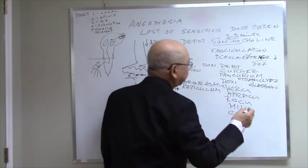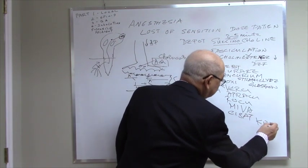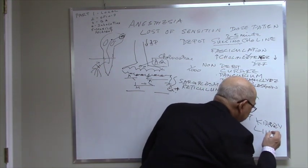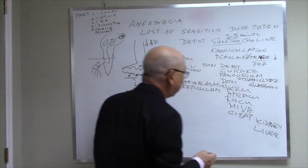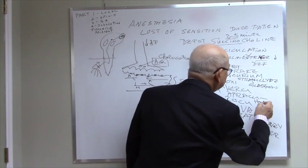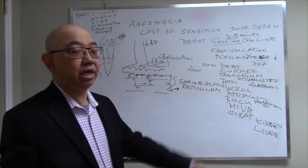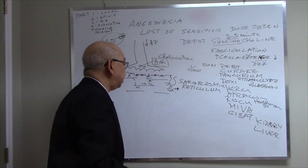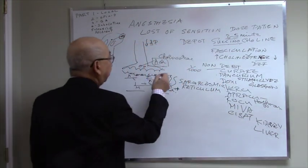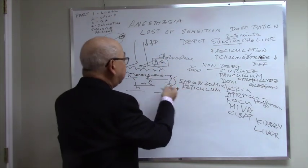Now, most of those muscle relaxants are excreted by the kidney and the liver. Atracurium is different. Atracurium undergoes Hofmann elimination — self-destruction. So those non-depolarizing muscle relaxants sit here like a blob, preventing acetylcholine from reaching the receptor until their concentration falls.